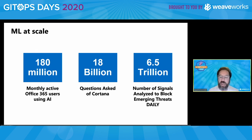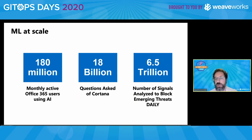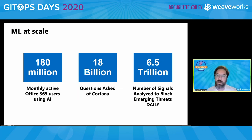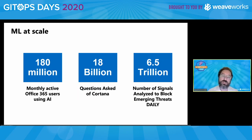180 million active users a month use Office machine learning-backed solutions. 18 billion questions asked of Cortana. 6.5 trillion security events evaluated every day via Windows and other things. And the reality is that there's no way we could do any of this without machine learning and a very efficient machine learning platform that allowed us to retrain and understand what was going on at any given time.